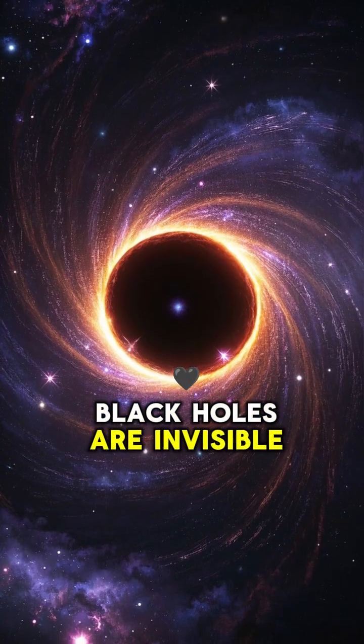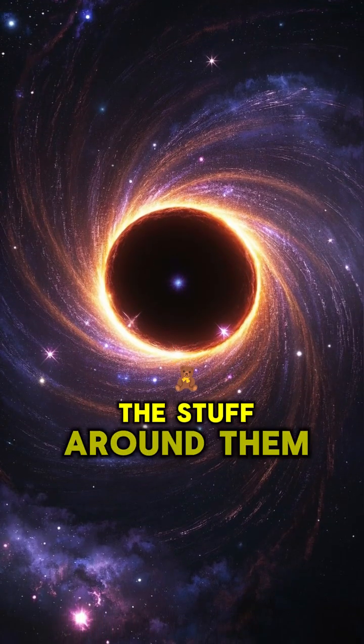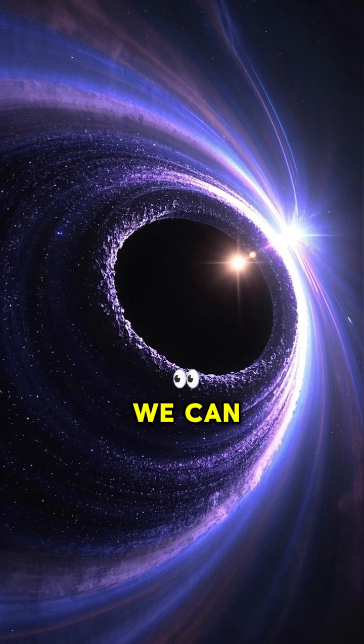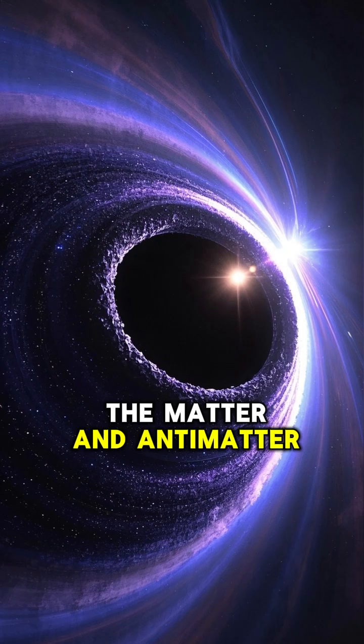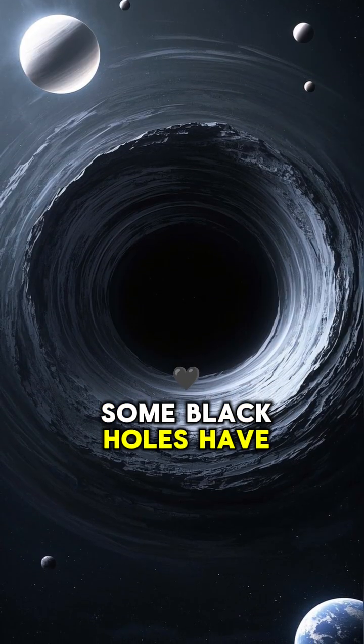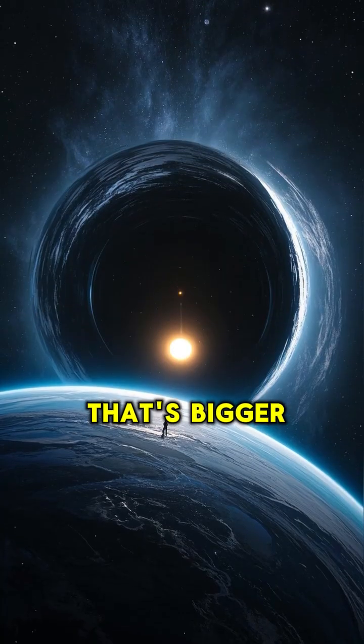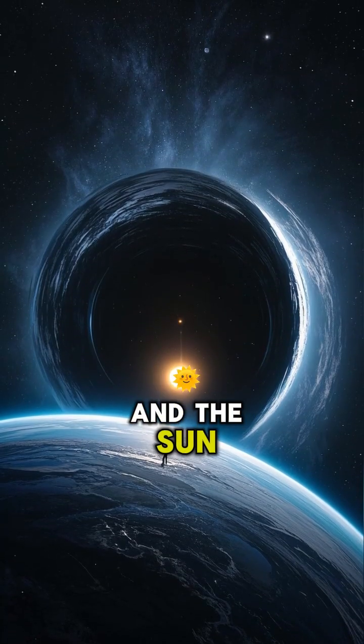Black holes are invisible, but we can see the stuff around them. Because black holes don't emit any light, we can only observe the matter and antimatter that surrounds them. Some black holes have a radius of over one billion kilometers. That's bigger than the distance between the Earth and the sun.